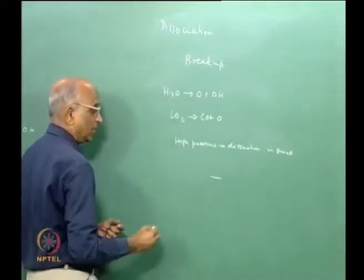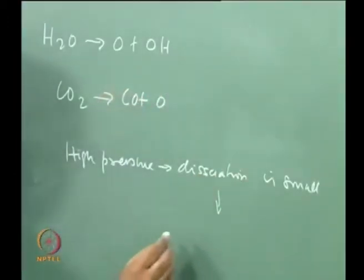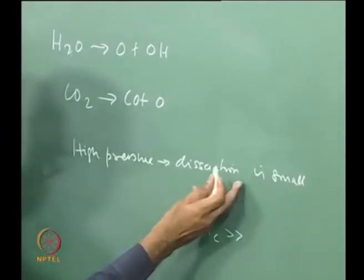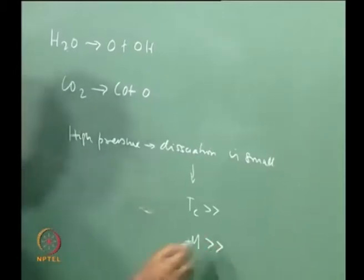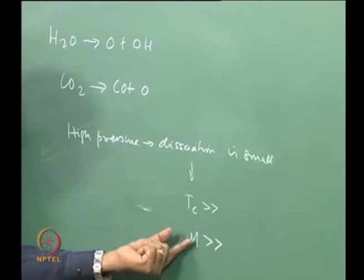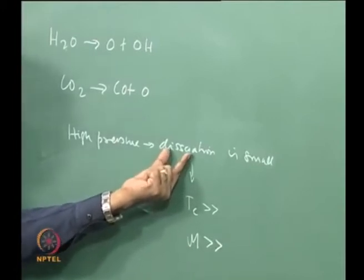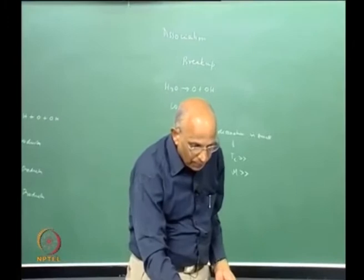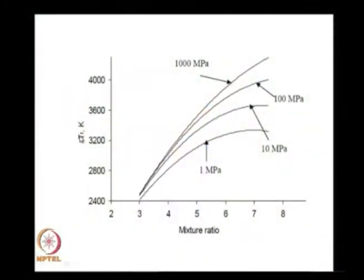If dissociation is small at high pressures, energy is not lost in dissociation and Tc will be higher. Since dissociation is small, the molecular mass will also be large, but the effect of Tc is more dominant, and this still has an effect on C*. Here I plot the temperature of the products of combustion as a function of mixture ratio for a fuel-rich hydrogen-oxygen mixture at pressures of 1 MPa, 10 MPa, 100 MPa, and 1000 MPa.